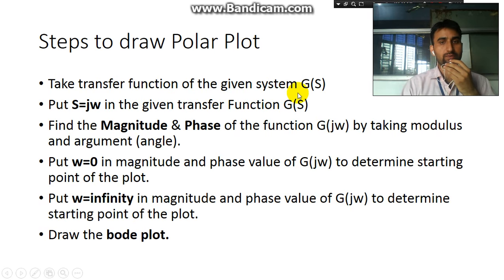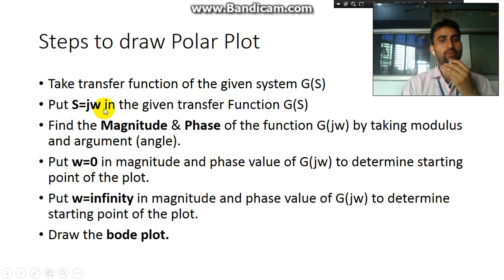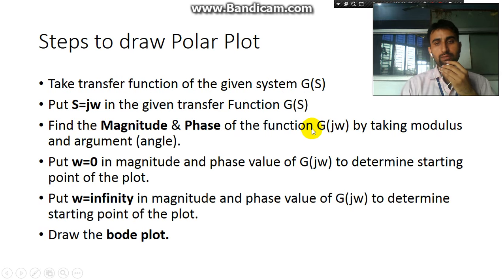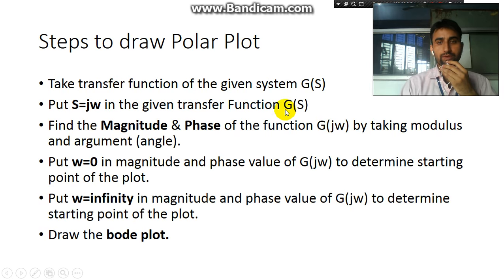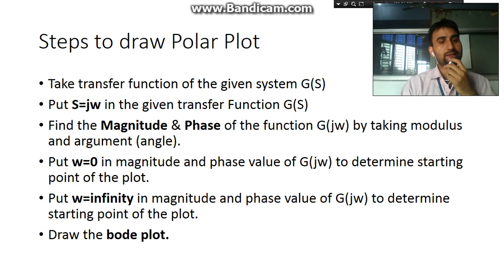The first step was to take the transfer function of the given system G(s) and put s equal to jω in the transfer function. Then we found the magnitude and phase of the given transfer function by taking the modulus and argument — that means the angle of G(jω).